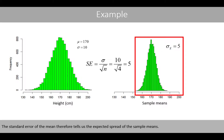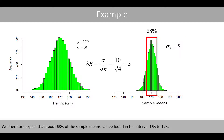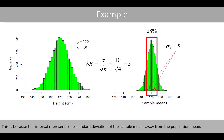The standard error of the mean therefore tells us the expected spread of the sample means. We therefore expect that about 68% of the sample means can be found in the interval 165 to 175, because this interval represents one standard deviation of the sample means away from the population mean.